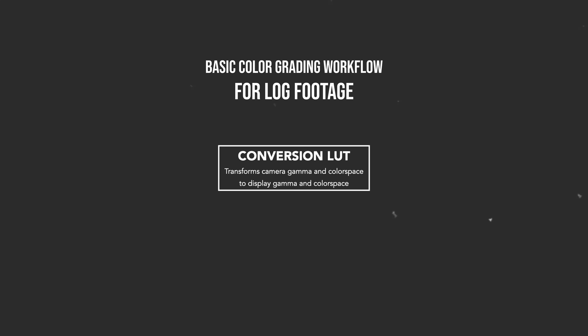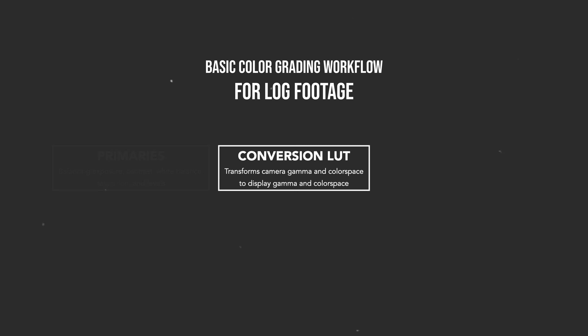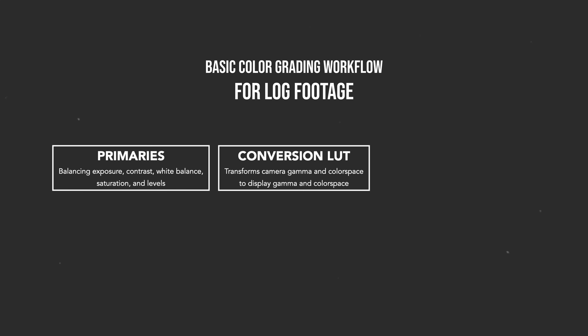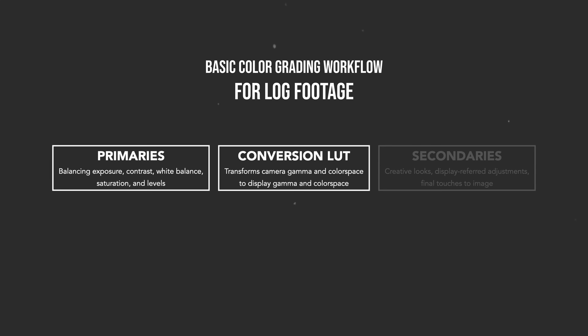As an overview when you're working with log footage, there's kind of a three-step process involved. The first step is converting the log footage to Rec.709, which is your display profile. You want to make sure to do this step first so that you're viewing it properly. The next step, which kind of comes before that, is doing your basic adjustments like white balance, exposure, contrast, saturation, all of that. These adjustments happen before the conversion LUT in the image processing pipeline, but you want to make sure that you're doing these adjustments while viewing them through the conversion LUT. Then the third step is basically after the conversion LUT where you're making final adjustments and applying creative looks or making small adjustments to fine-tune the image to your liking.